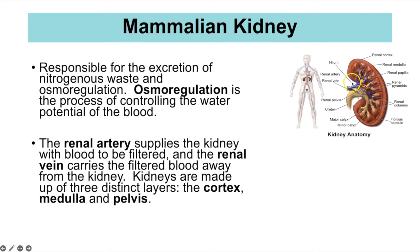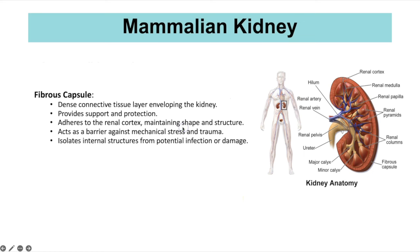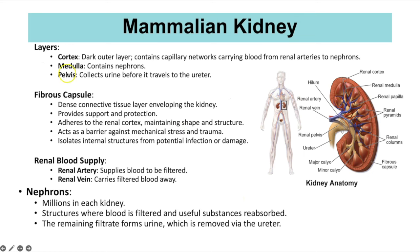Looking at the kidney, we can see the renal artery and the renal vein. The renal artery supplies the kidney with blood that needs to be filtered, and the renal vein carries that filtered blood away. The kidneys are made up of three distinct layers: the cortex, the medulla, and the pelvis. The cortex is the dark outer layer containing capillary networks carrying blood from the renal arteries to the nephrons.